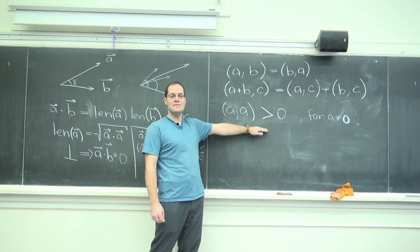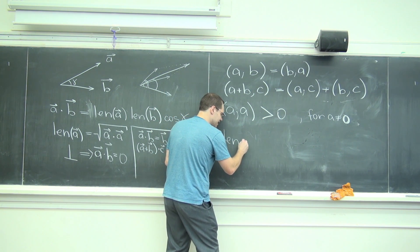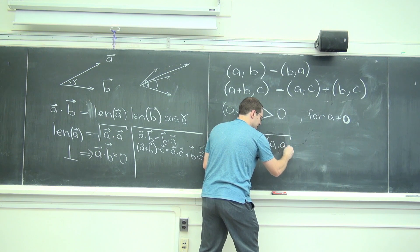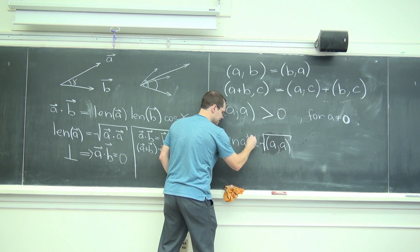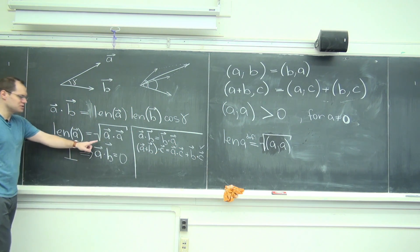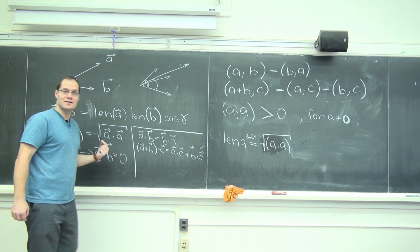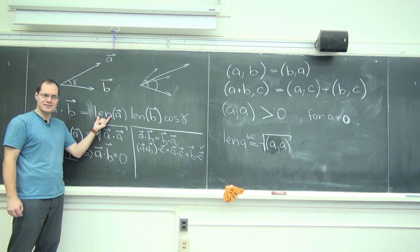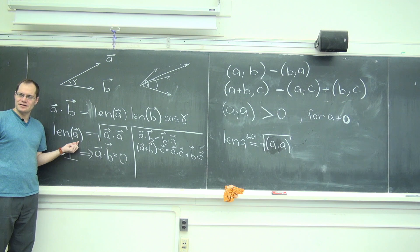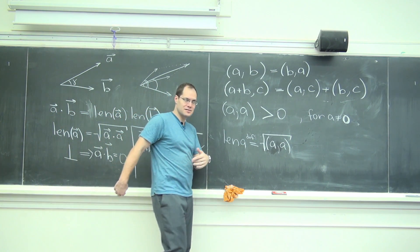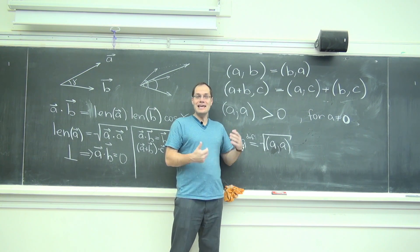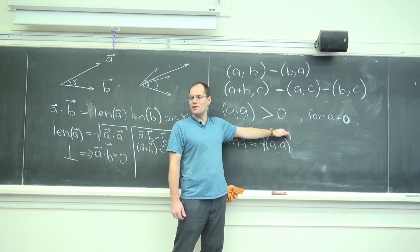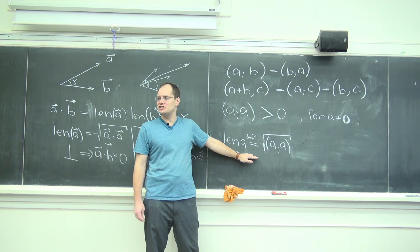And then, once you have the inner product, I will define what length is. Length of a vector a is the square root of a dotted with a — by definition. Do you see the profound difference? When we were doing geometry, length was a given, angles were a given, we defined the inner product and then observed this property. In linear algebra, everything's turned on its head. Inner product comes first, axiomatically. Anything that has these three properties is called an inner product, and this is now the definition of length.